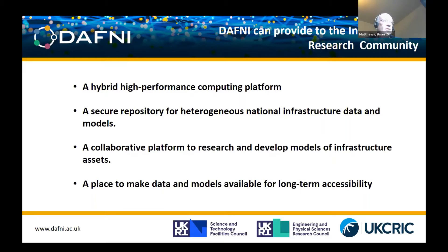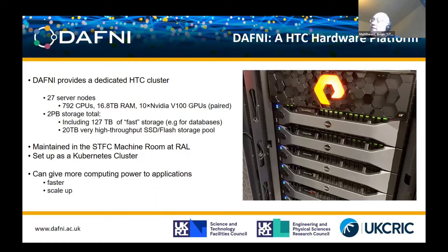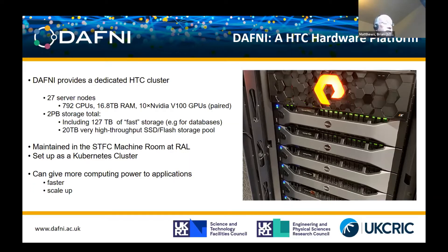The hardware platform is a dedicated system held in our data center, currently comprising 27 server nodes with 2,792 CPUs, some GPU accelerators, and two petabytes of storage of various sorts — ranging from long-term disk store to very rapid storage for quick data manipulations. It is set up as a Kubernetes cluster, which gives particular advantages in how we can serve models to the community. While not a huge HPC cluster, it's a significant cluster that can be used to scale up models.